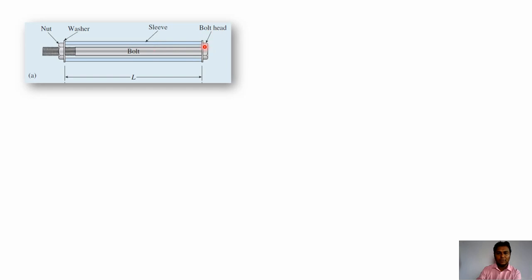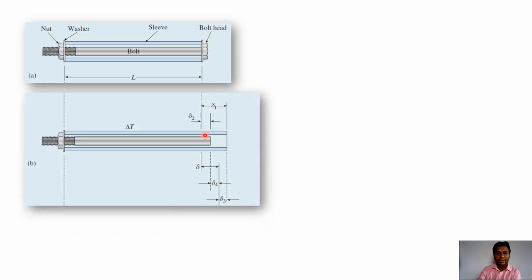When we remove the bolt head and washer, and the assembly is subjected to rising temperature, the sleeve and bolt will expand freely. Here delta_1 will be the free expansion for the sleeve and delta_2 will be the free expansion for the bolt. Since the assembly is fixed at both ends, the net expansion of the whole assembly will be the same value delta, which is the net increase in length of the assembly.